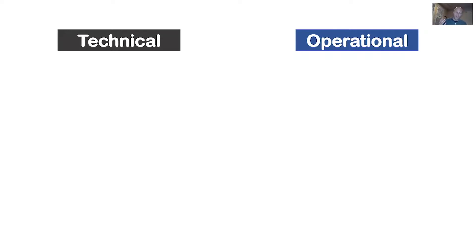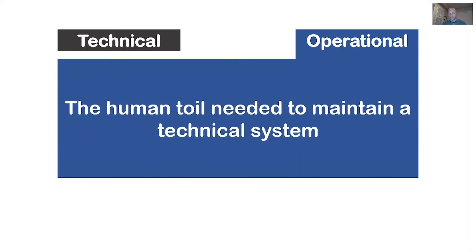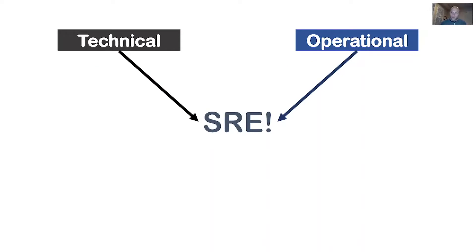In our day-to-day work, SREs are constantly playing that balancing game of technical and operational aspects of a system. Technical here means any hardware and software choices you make — programming languages, architectures, frameworks, the tech stack, et cetera. The operational side captures all the human toil needed to maintain the technical system, including on-call, problem management, observability, and various team processes. These two areas are typically separate roles, with software engineers focusing on the technical piece and ops engineers focusing on the operational piece.